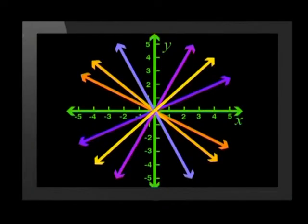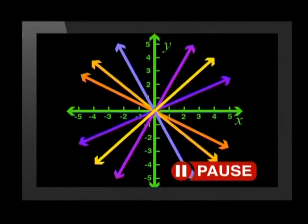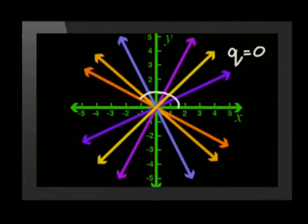Have a look at all these straight line graphs — they all represent linear functions. Each of them has a formula that fits the form y equals ax plus q, where a is the gradient and q is the point where the graph cuts the y-axis. They all cut the y-axis at zero, meaning they all have a q value of zero. When q equals zero, the graph cuts the y-axis at the origin (0, 0).